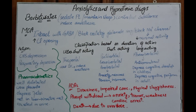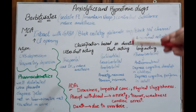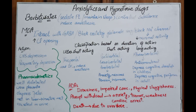Barbiturates are used to sedate patients and maintain sleep; they act as controlled substances and are mostly short-acting, including for anesthesia. Mechanism of action: sedative-hypnotic action occurs through interaction with GABA receptors, prolonging chloride channel opening, which causes chloride influx, reduced neurotransmission, and no action potential. They also block excitatory glutamate receptors.